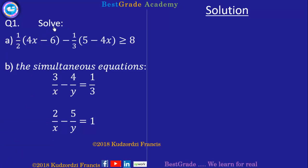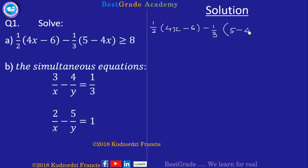We are solving part A: 1 over 2 into 4x minus 6, minus 1 over 3 into 5 minus 4x, is greater than or equal to 8.